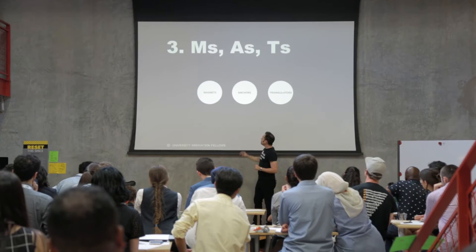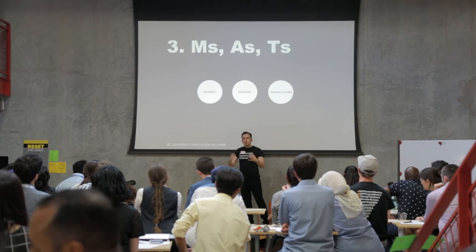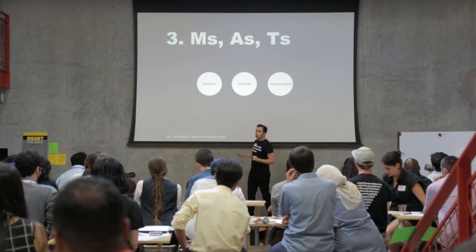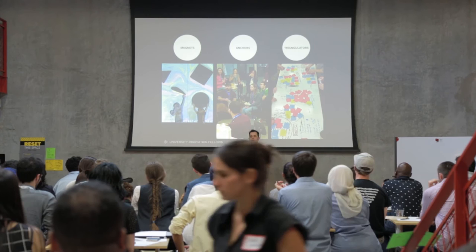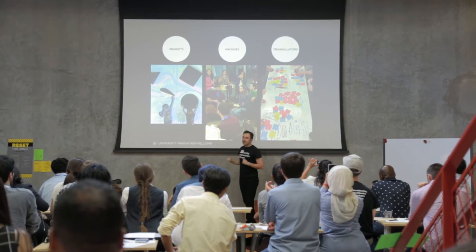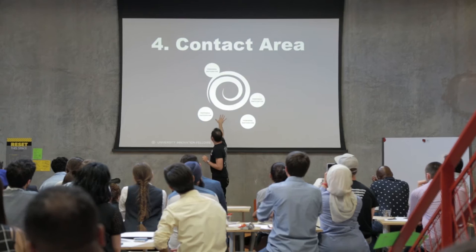The third pattern talks about strategies and ways to attract people to your place. Magnets attract them, anchors are the ones that keep them in the place, and triangulators are the ones that help people relate to one another and interact. For instance, we use art to attract people to our location. We provide a variety of places to sit and even food to eat so that they can anchor, and we run many different activities for them to relate to and interact with each other.